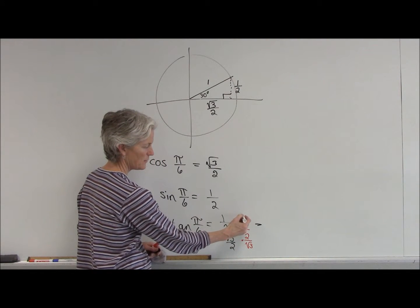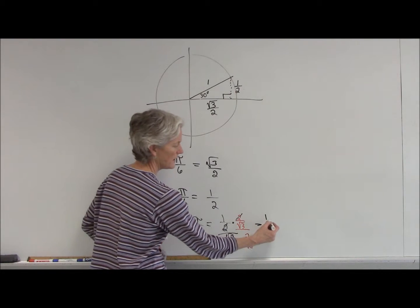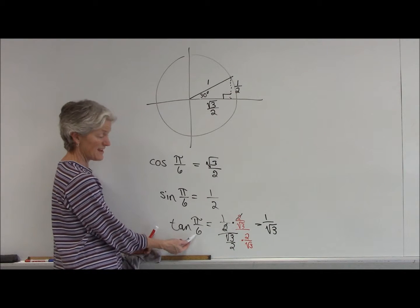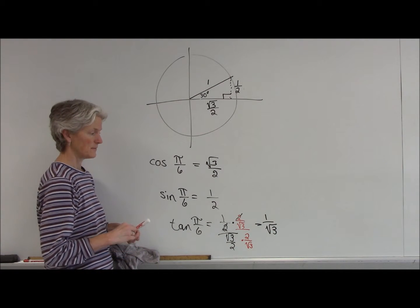So, that's going to give me 1 over the square root of 3. That would be the tangent of my 30 degrees or the tangent of pi over 6. Make sense?